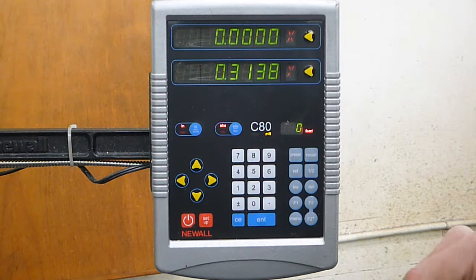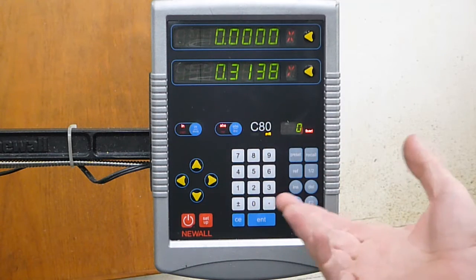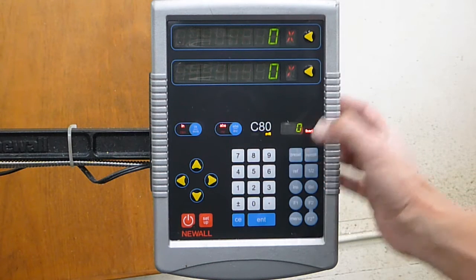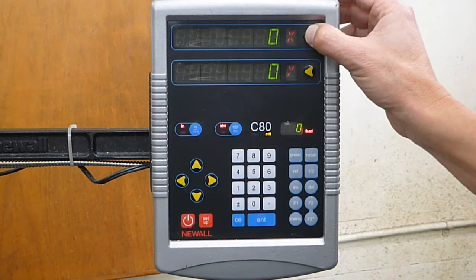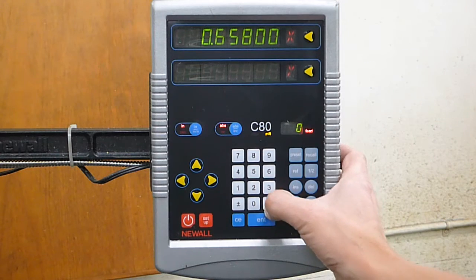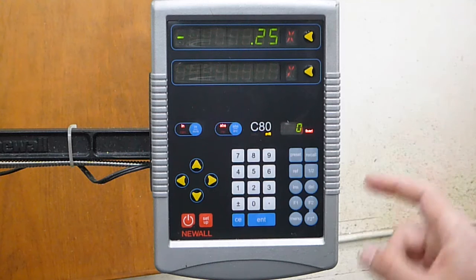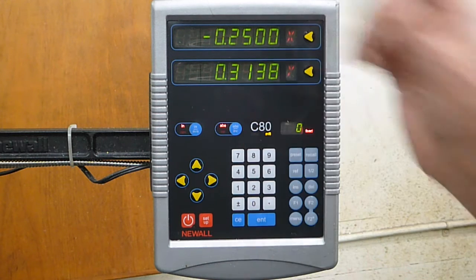If I want to put a value in there instead of zeroing it, say the radius of the edge finder, what I'll do is I'll hit preset here, select the axis that I want to put a value in, and then put the value in—0.25, maybe it's on the negative side—and then just hit enter and this is negative 0.25.